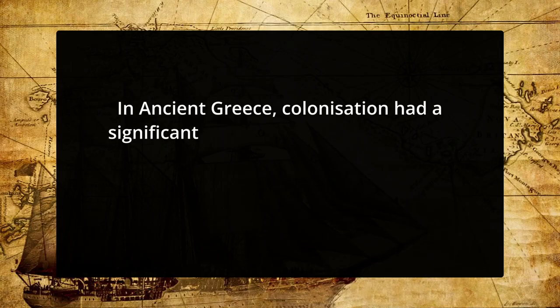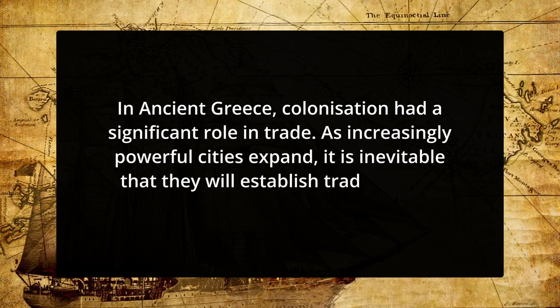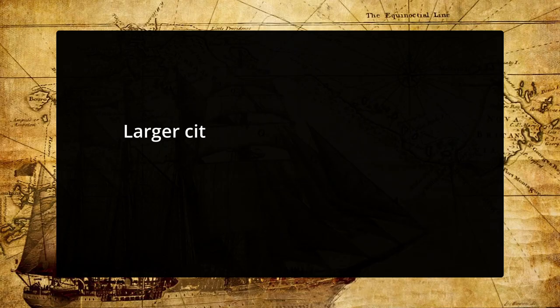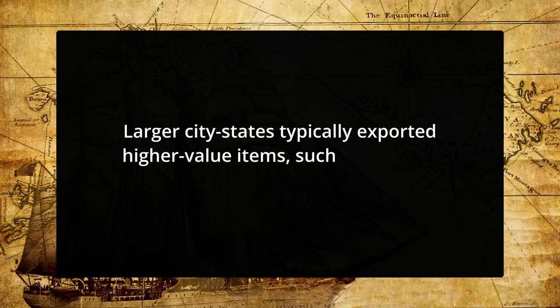Before the end of the archaic period, the Greeks had colonized some of the most valuable trading regions in the Mediterranean. In ancient Greece, colonization had a significant role in trade. As increasingly powerful cities expanded, it was inevitable that they would establish trading posts in their colonies. Climatic differences between cities and their associated colonies provided competitive advantages in the production of goods. Sicilian colonies frequently enjoyed better weather and had access to markets where they could sell grain to towns with larger populations. Larger states typically exported higher-value items such as olive oil to these colonies, and all primarily commercial governments were encouraged to pursue colonial endeavors and maritime trade.